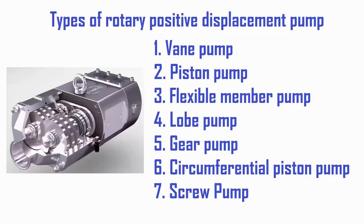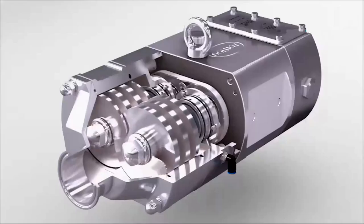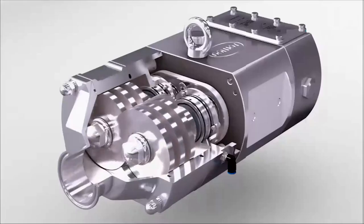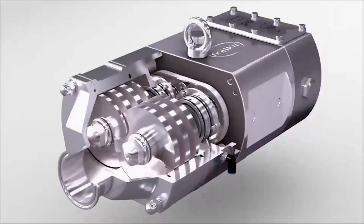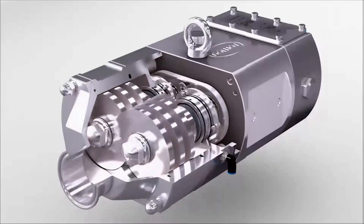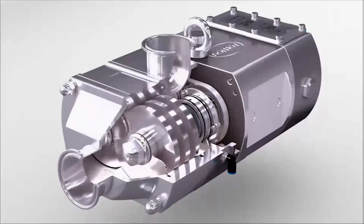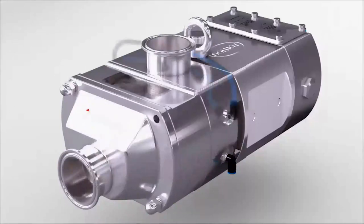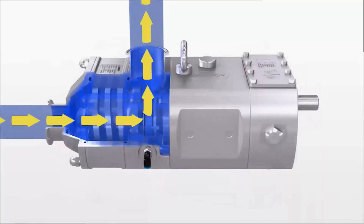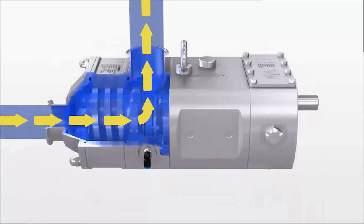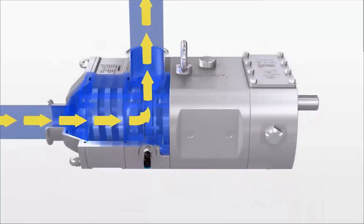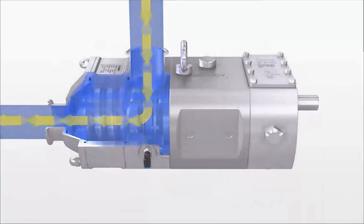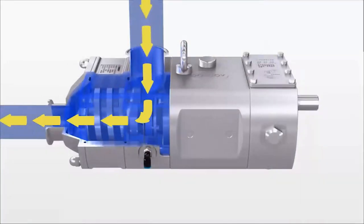The seventh type is the rotary screw pump. A screw pump is a pump that uses one or several screws to move fluids along the screw axis. The sucked fluid is pressed from the fluid inlet side to the fluid outlet side using the cavity between the screw and the pump casing while the screw rotates, pressing the fluid along the screw axis.